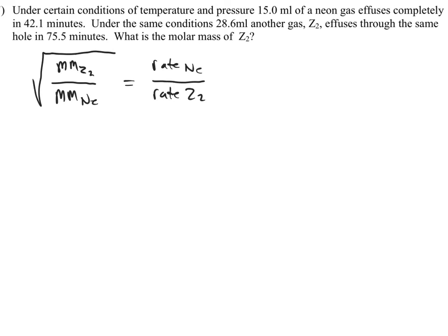What we want to do now is look at the rate. Let's take the rate of neon. That's going to equal 15.0 milliliters, and I'm just going to go ahead and solve for rate. That's 42.1 minutes on the bottom. So that equals 0.356 milliliters per minute.